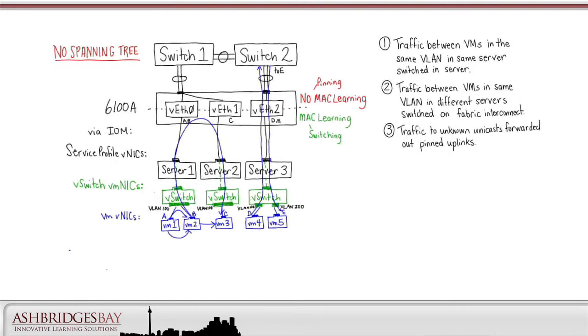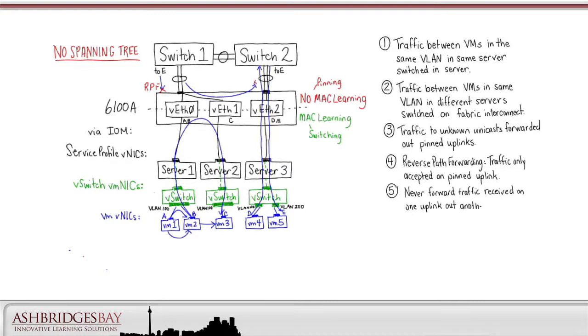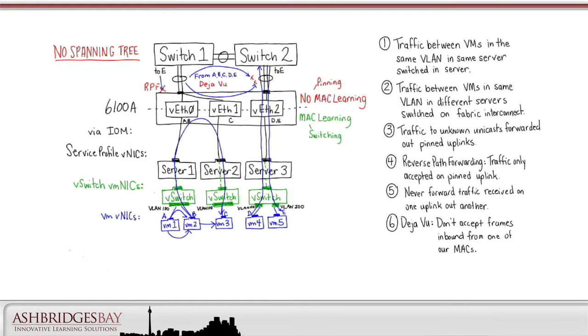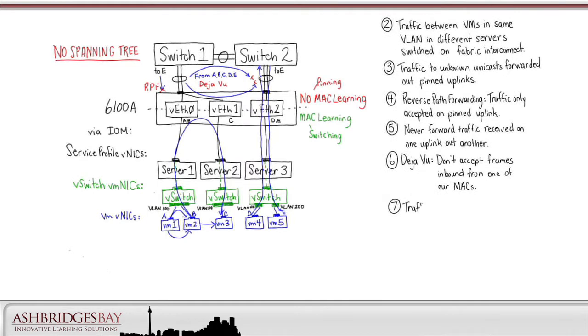Traffic to unknown unicast addresses will be forwarded up the pinned uplink. Inbound traffic to a MAC address will only be accepted on the pinned uplink. This is called reverse path forwarding. The Fabric Interconnect will never forward traffic received on one uplink out another uplink. Deja vu! Don't accept inbound traffic from one of our own MAC addresses.